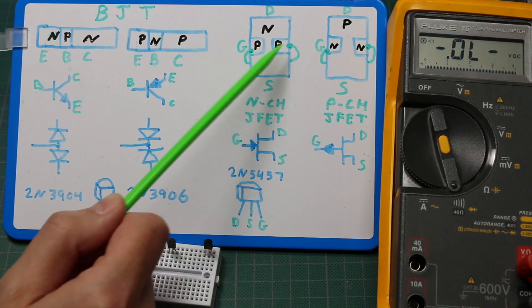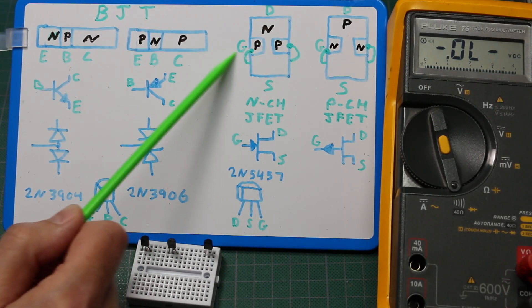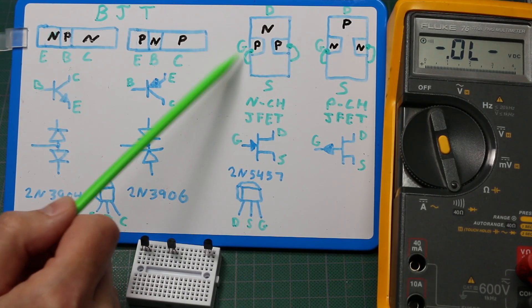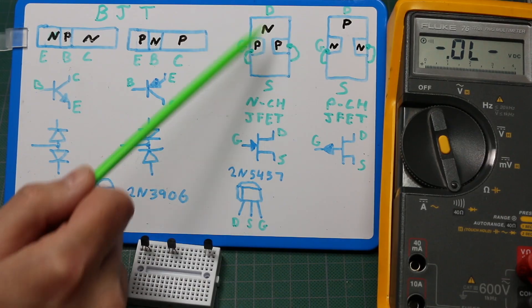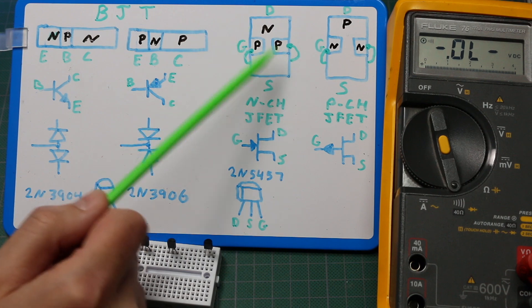So this N-channel JFET has a P-type silicon gate and an N-type channel from drain to source, which gives us a single PN junction that we can test.